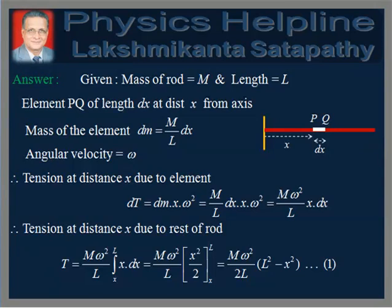Therefore, mass of the element is given by dm equals mass per unit length into length of the element, which is equal to M by L into dx. Angular velocity is given as omega.